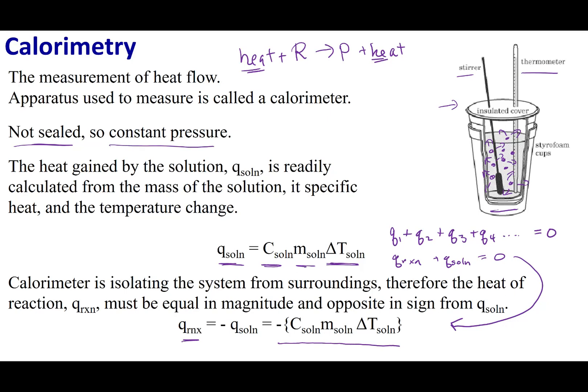If my calorimeter is a coffee cup calorimeter, I'm under constant pressure, which means ΔH = Q_P. So if I'm measuring the heat in this calorimeter, I'm also measuring the enthalpy because it's under constant pressure. Sometimes people say heat of reaction and enthalpy of reaction interchangeably, because they are equal to each other in this setup.